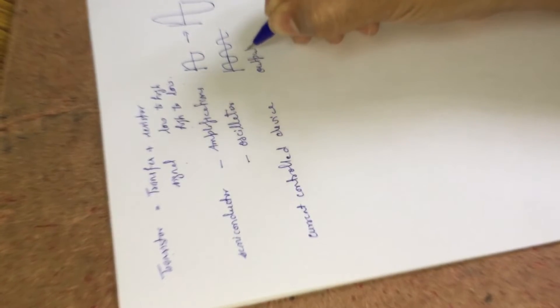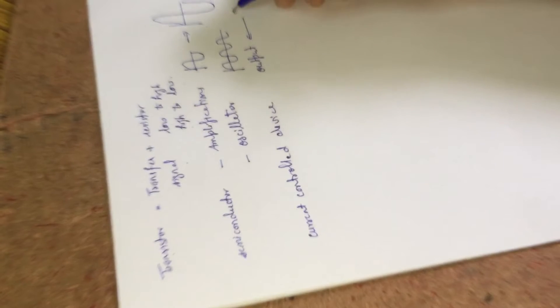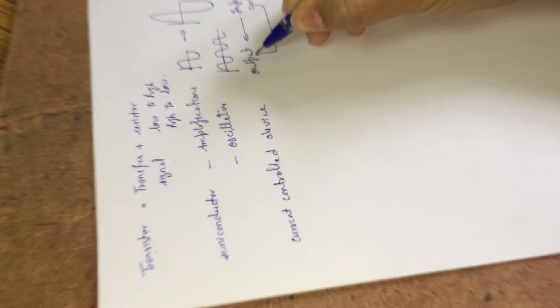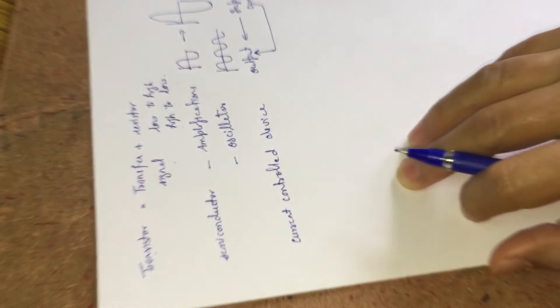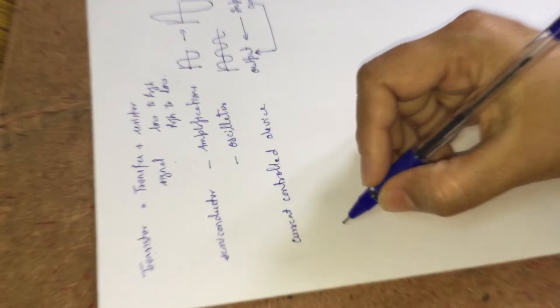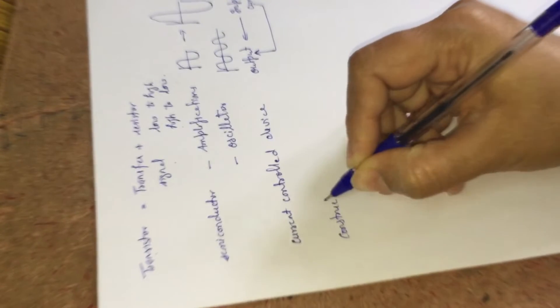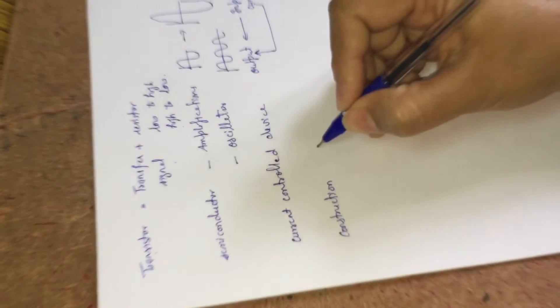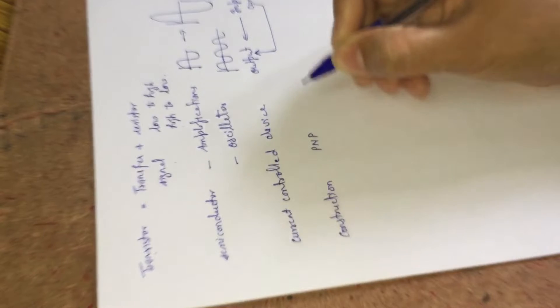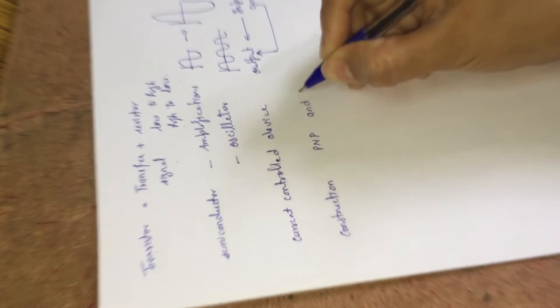Transistor is a current controlled device. Current controlled devices are those devices in which the output is controlled with the help of the input, and the input signal in current controlled devices is current. It means by changing the current on the input side we can change the output signal.